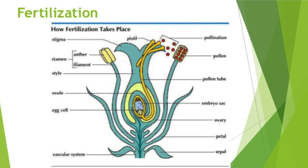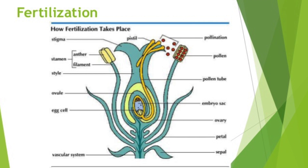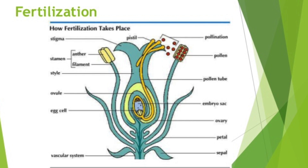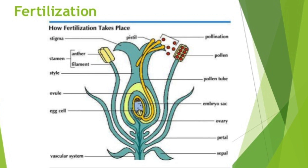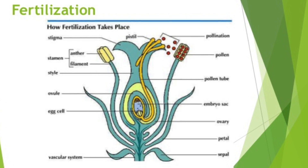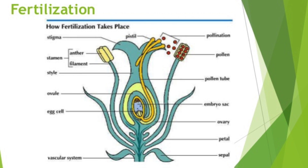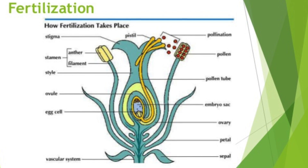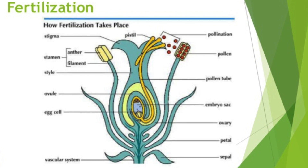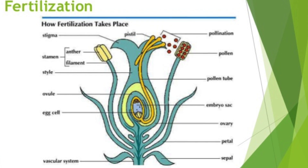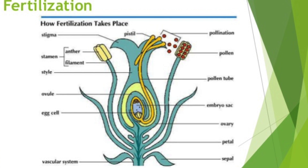Fertilization in plants occurs when haploid gametes meet to create a diploid zygote, which develops into an embryo. In gymnosperms, conifers, and angiosperms — flowering plants — the meeting of the gametes occurs in the following way.